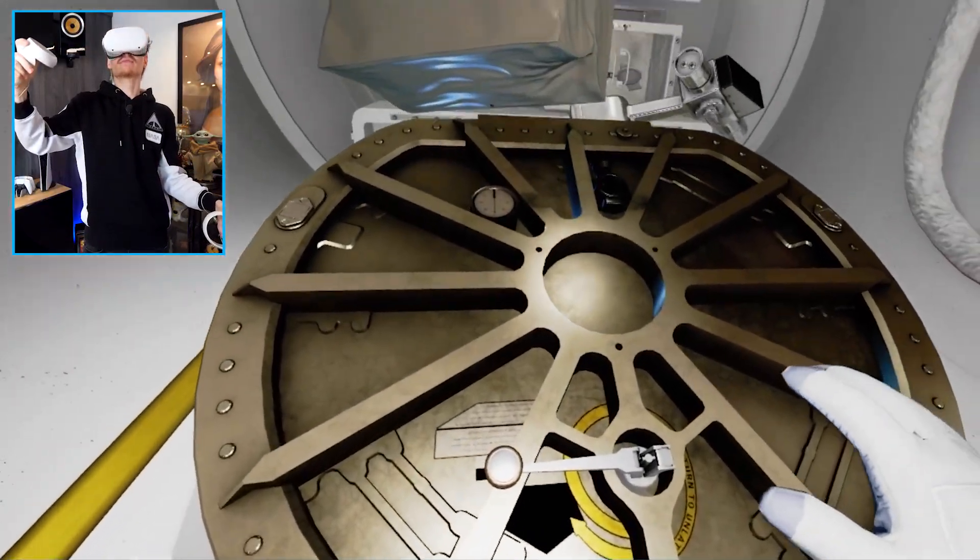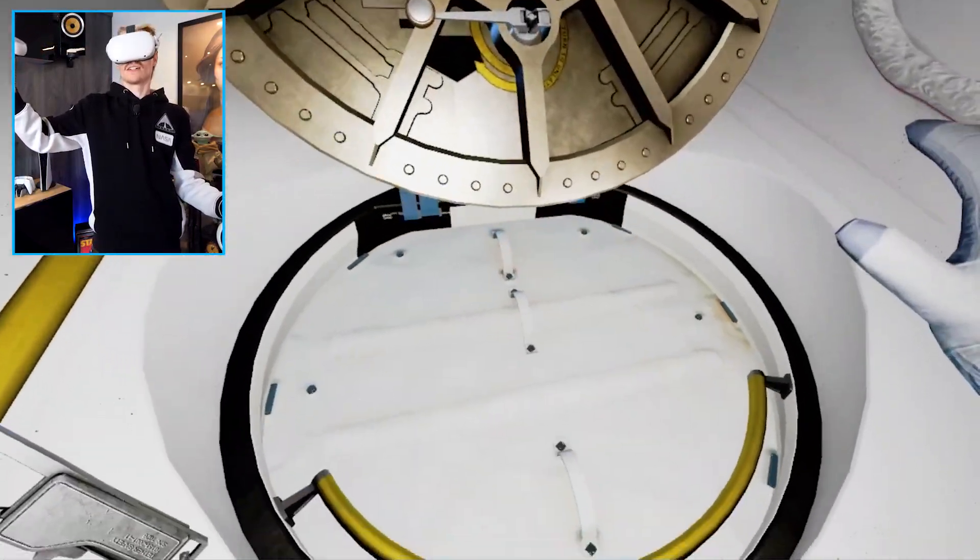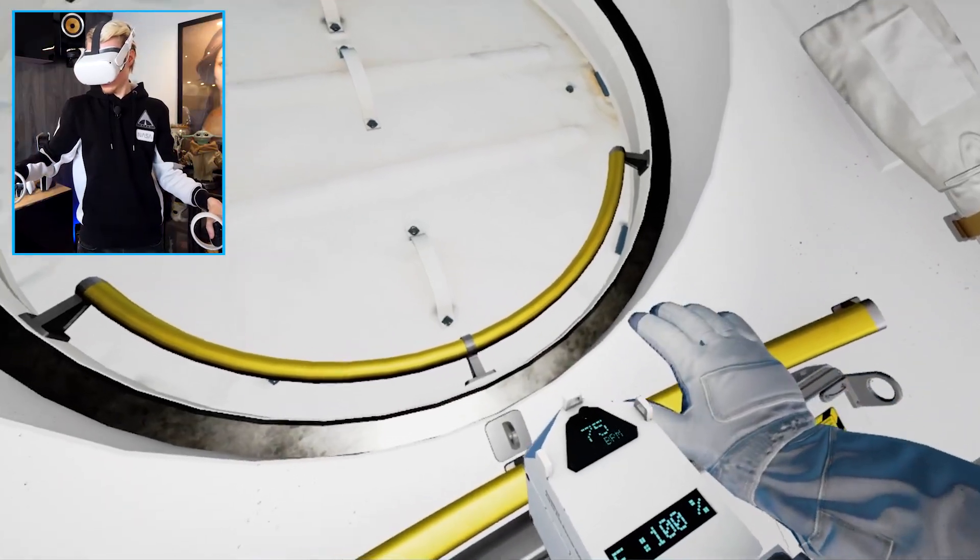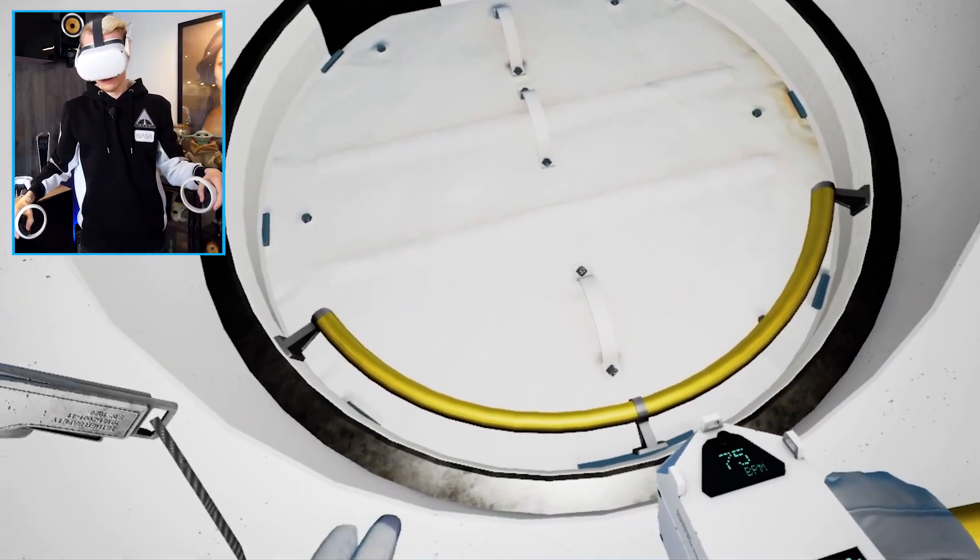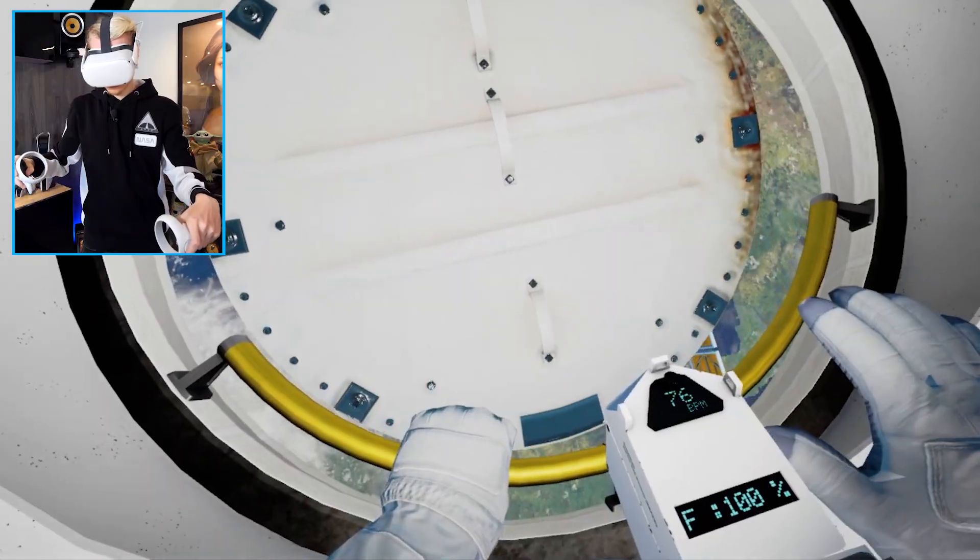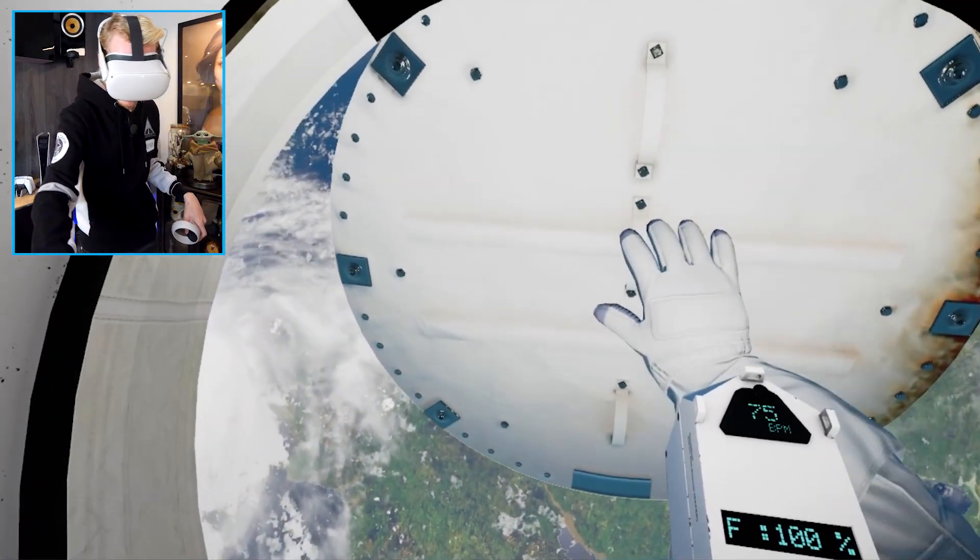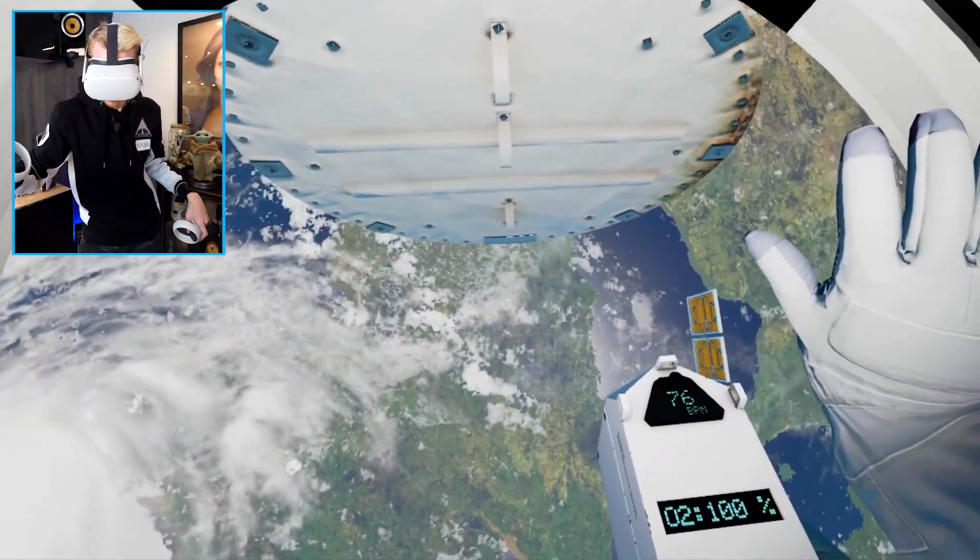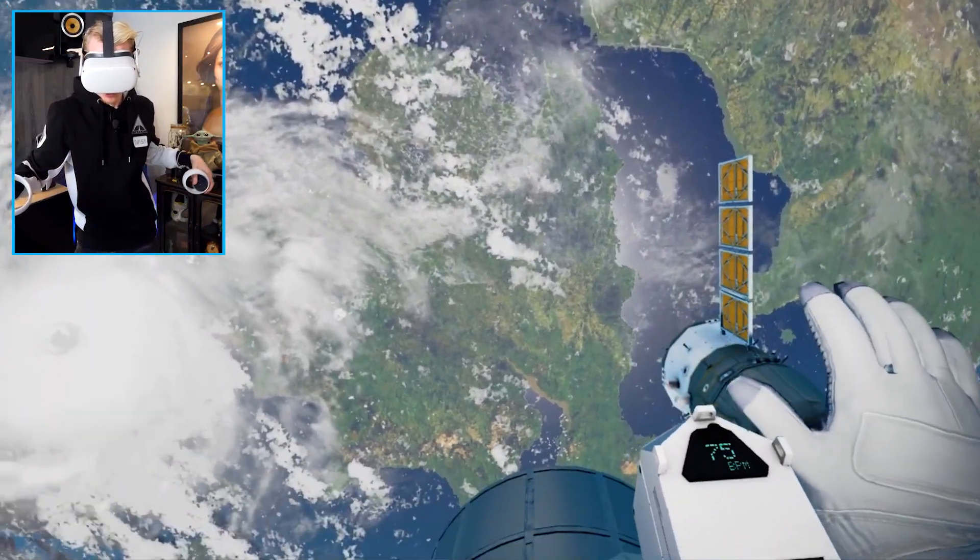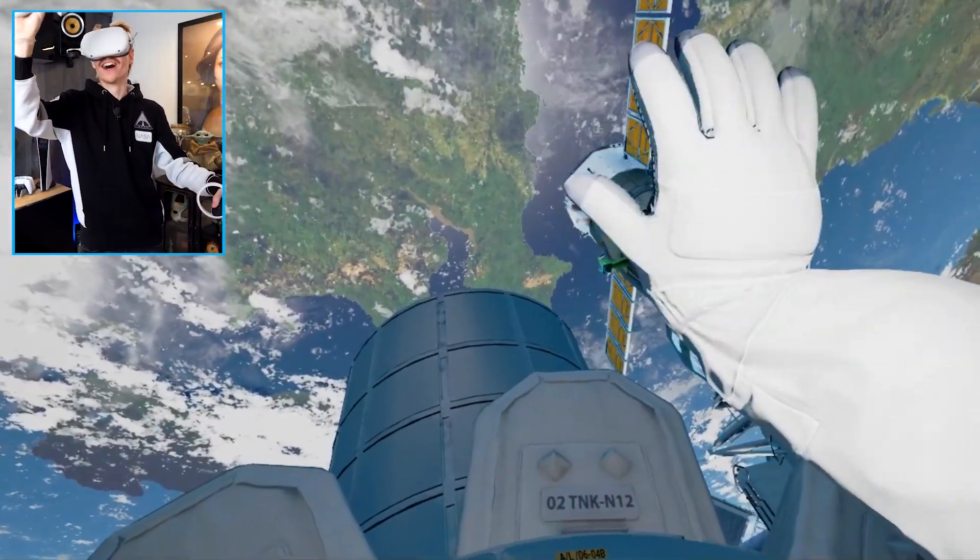EV2, Space Station Command. Houston here, we are ready to open the airlock. Copy that, Houston. Airlock hatch is opening. EV2, your toolbox is attached to your waist belt. We are ready for you to move outside. Space is just through that hatch in front of you. Grab hold of the yellow handle.